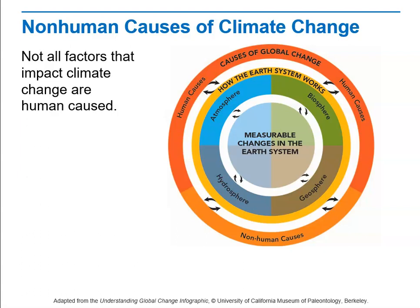There are human causes of climate change, and there are also non-human causes of climate change. The non-human causes are indicated in the outer circle of the model at the bottom. The human causes are indicated on the top of the circle and the non-human causes on the bottom.